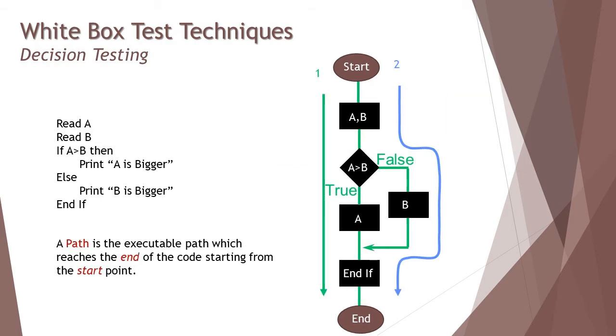Additionally, to tell you more about path from the basics, a path is an executable way which reaches the end of the code starting from the start point of the flow chart.